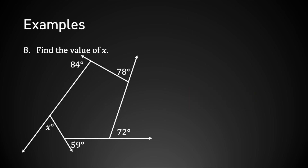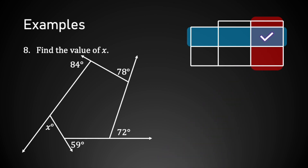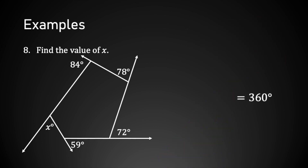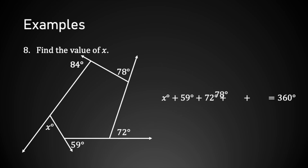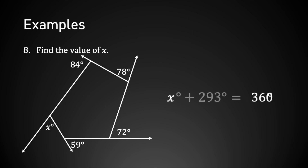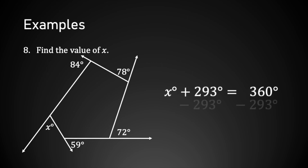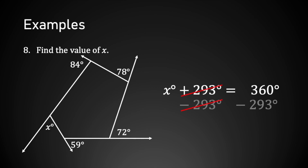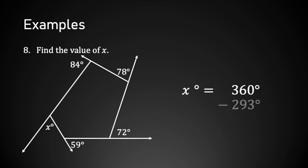Last example: this time it's exterior angles, which add up to 360 degrees no matter how many there are. So x + 59 + 72 + 78 + 84 = 360. Adding 59, 72, 78, and 84 gives 293, so x + 293 = 360. Subtracting 293 from both sides gives x = 67.